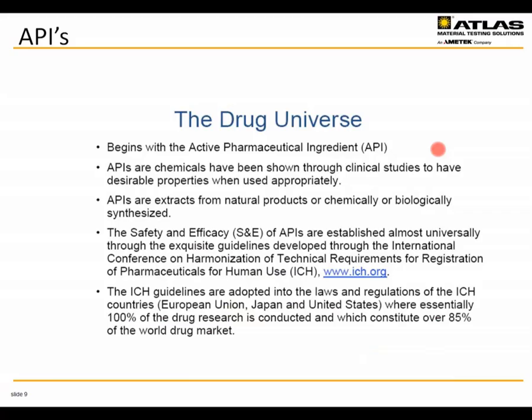When talking about the drug universe, we are principally involved with the active pharmaceutical ingredient in the preparation. The safety and efficacy of the API is established through an international conference on harmonization of technical requirements for registration of pharmaceuticals for human use, otherwise abbreviated the ICH. The ICH has established a series of guidelines adopted into the member countries — called the tripartite agreement — with three principal signatories: the member states of the European Union, the country of Japan, and the United States.